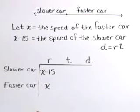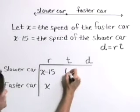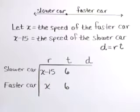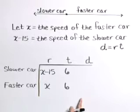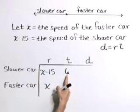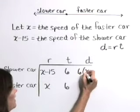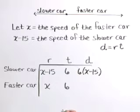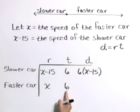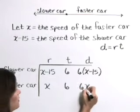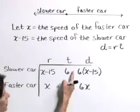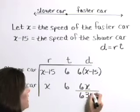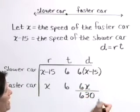We're told that in six hours, they are 630 miles apart. And they've started at the same time. So for each, the time is six or six hours. Now I'm going to use this equation d is equal to rt to complete our last column. The slower car travels the distance of its rate times its time, or six times x minus 15. The faster car travels the distance of its rate times time. That's x times six, or let's write this rather as 6x. Now we're given an additional piece of information that the total of our distances is equal to 630 miles. So we're going to use that fact to create our equation.